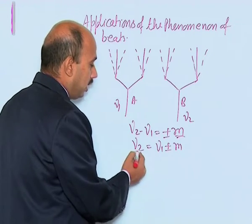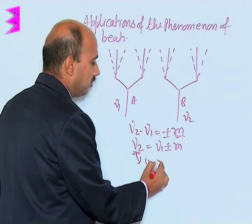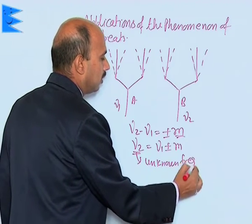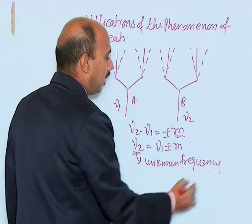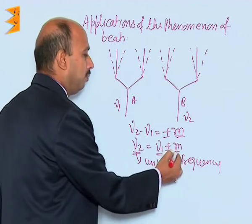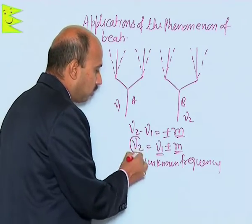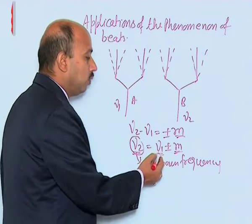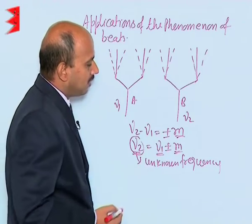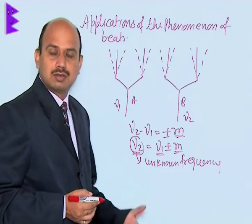Here, nu2 is the unknown frequency and nu1 is the known frequency. m is the number of beats. So we can get nu2 by knowing nu1 and m. The positive and negative sign of m are decided by two ways.